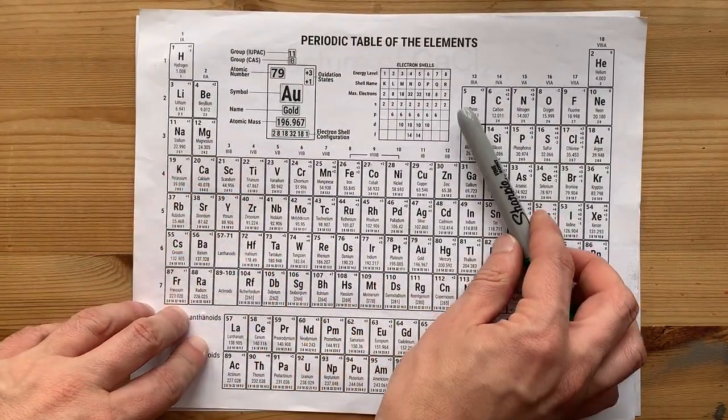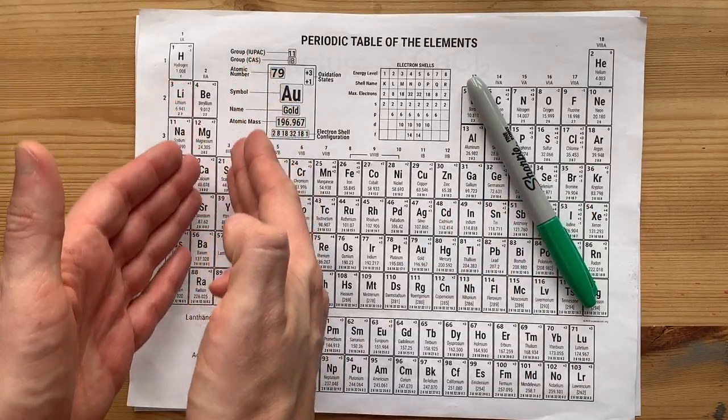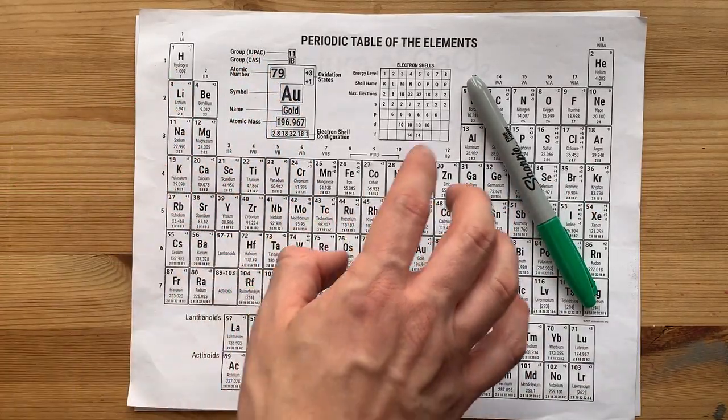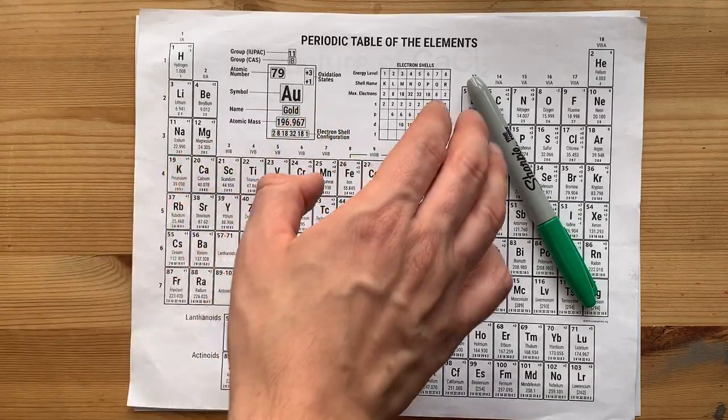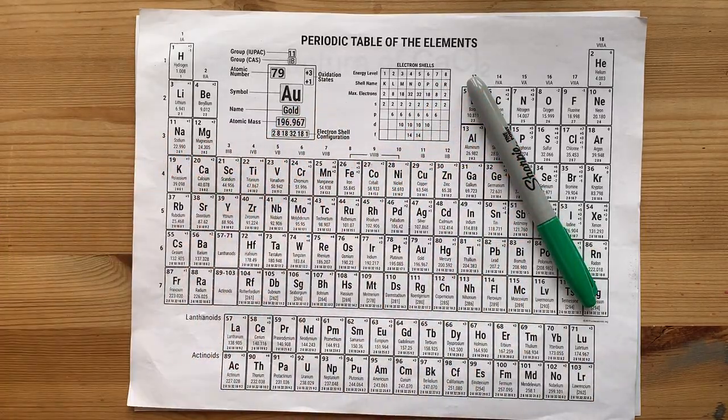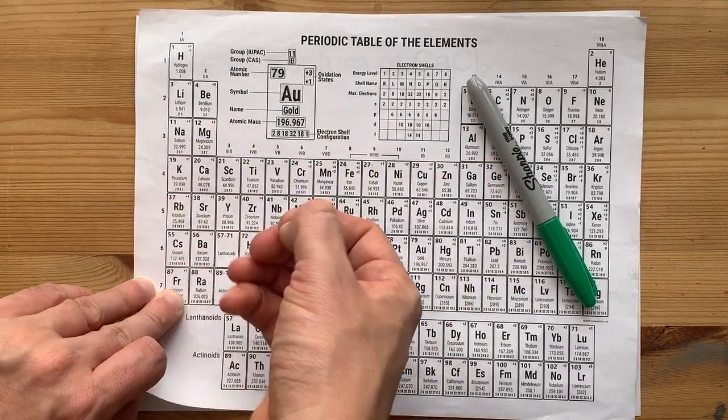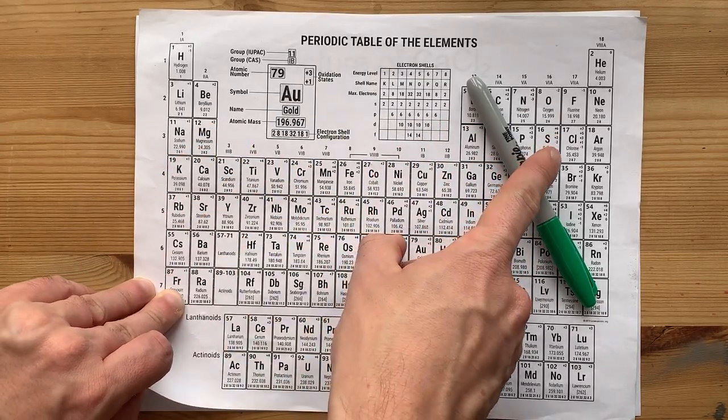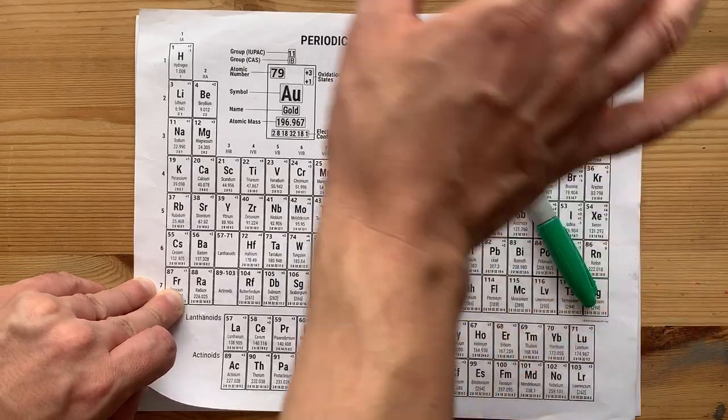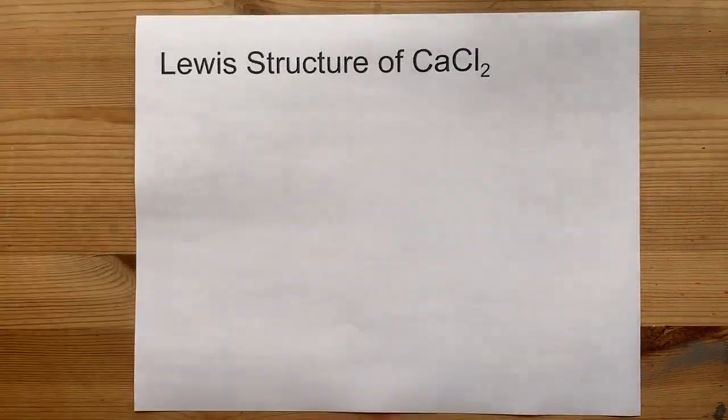Calcium is a metal. It's in the alkaline earth metal column, but more importantly it comes from the left side of the staircase on the periodic table. Hydrogen is an exception. Everything else here is a metal. Chlorine is a non-metal. It comes from the right side of the periodic table.